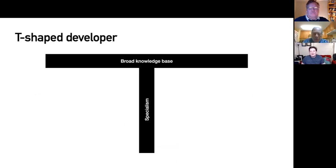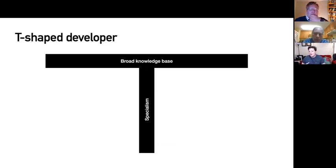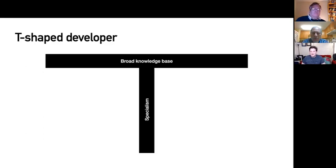It is impossible to be an expert in everything. The concept of a T-shaped developer describes someone with a broad knowledge base — enough to do something simple in every part of the stack — but with some deep specialism within that. This works well in modern software development because most of it is done in teams. A good team has T-shaped people whose deep specialisms are in different topics, combined with different disciplines like business analysts, data scientists, UX designers, and QA engineers.